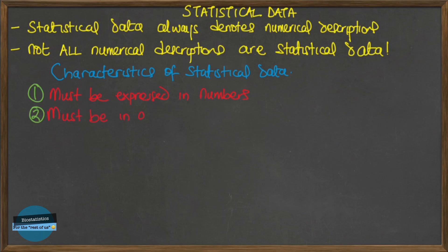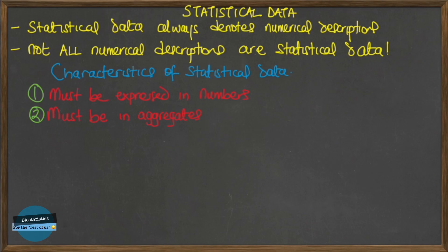The second characteristic is that statistics are aggregates of facts — they must be in aggregates. A single number cannot be called statistics. For example, the weight of an individual or the price of a commodity cannot be statistics, as you cannot relate or compare it with anything. However, aggregates such as births, deaths, accidents, etc. can constitute statistics, as these figures can be studied in relation to time, place, and frequency. For numerical descriptions to be termed statistical data, they must be in aggregates.